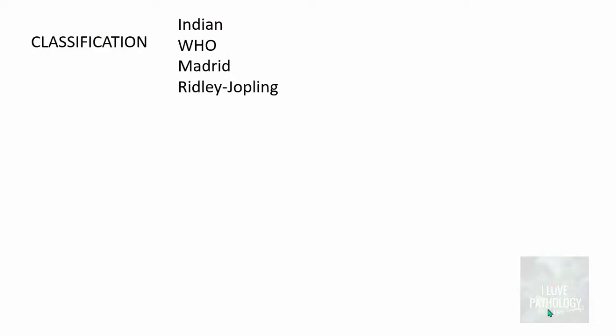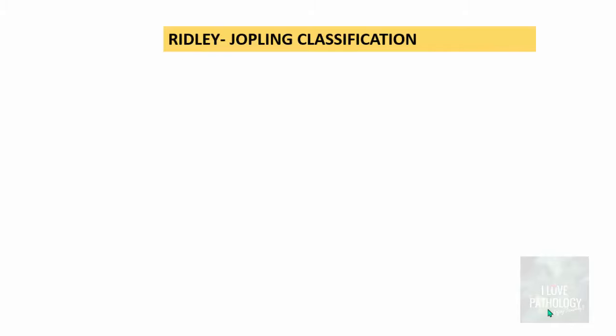Coming to classification of leprosy, there are different types: the Indian classification, the WHO classification, the Madrid classification, and the Ridley-Jopling classification. The most famous among these four is the Ridley-Jopling classification, which is based on the immune response of the body towards the bacilli.